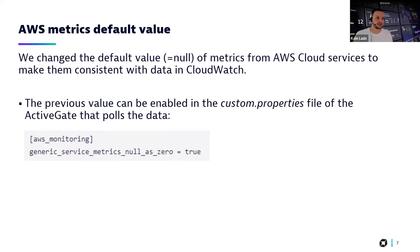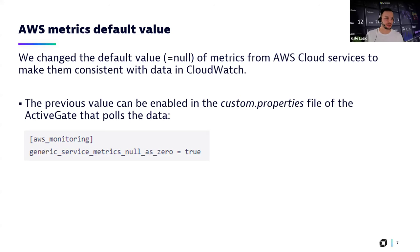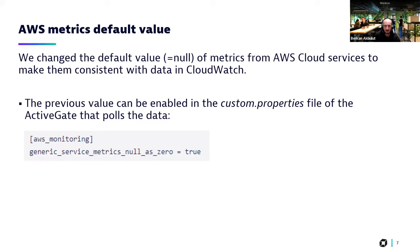There's one more change in the infrastructure observability context for AWS metrics. We changed the default value to null in order to align this with how the data is represented in CloudWatch. Before it was set to zero, now it's null. It's also possible to technically change this back to the zero representation in the ActiveGate that holds the data from your AWS CloudWatch API. With this new configuration, it maps one-to-one with the CloudWatch representation.